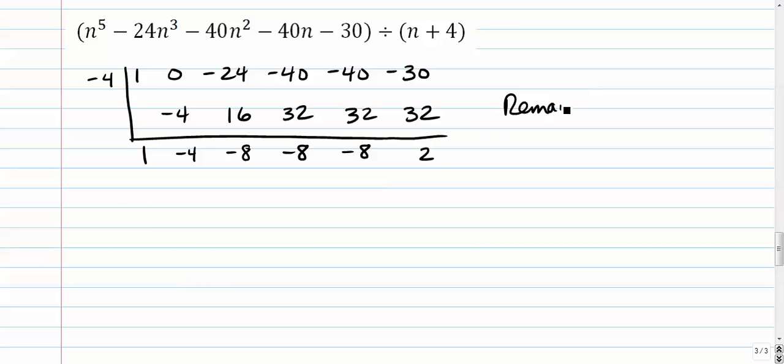So when your remainder is a non-zero, you do something kind of interesting here. So let's take care of this. We have 1n to the 4th. Again, we'll reduce that by 1. So we have 1n to the 4th minus, let me go back to the same color here,